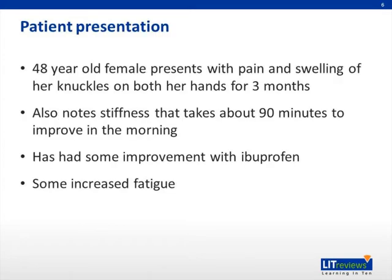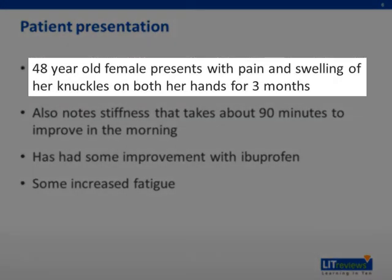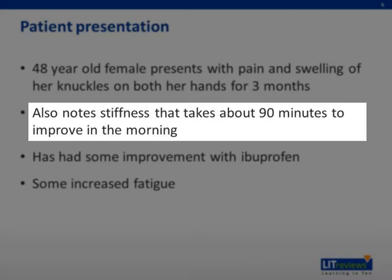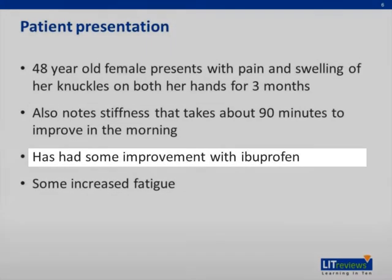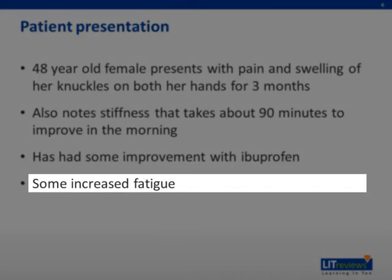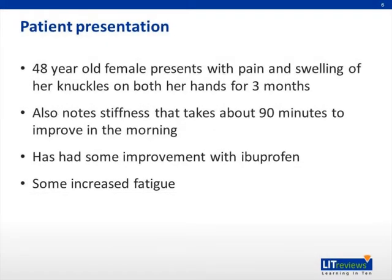Let's start with the case. A 48-year-old female presents to your primary care clinic with pain and swelling of the knuckles on both of her hands for the past three months. She states that symptoms tend to be worse in the morning. After waking up, she feels stiffness in her joints that lasts up to 90 minutes before she can loosen up. She's had some very mild improvement with ibuprofen but feels that symptoms may be getting worse. She's noted some increased fatigue as well. These new symptoms have piqued your interest and you consider a diagnosis of rheumatoid arthritis.